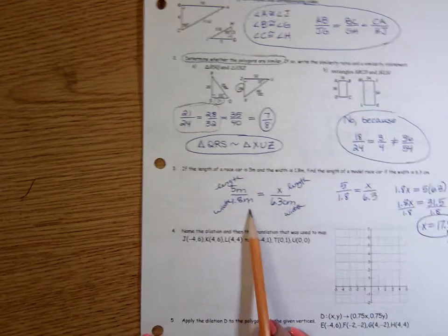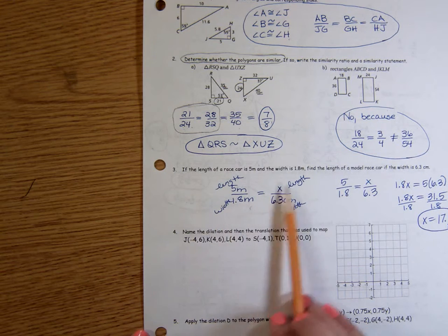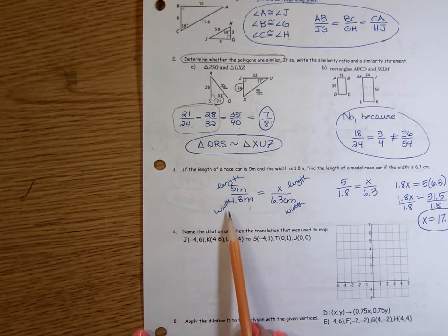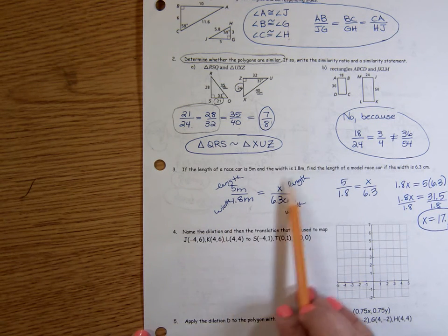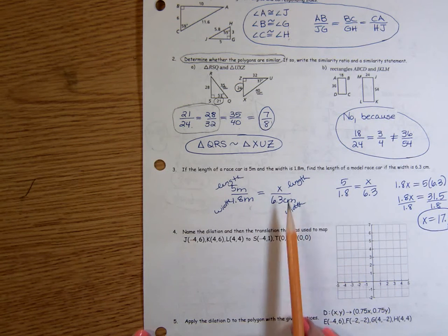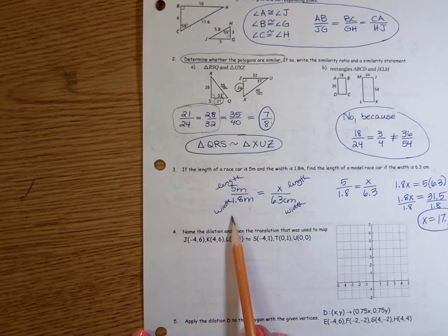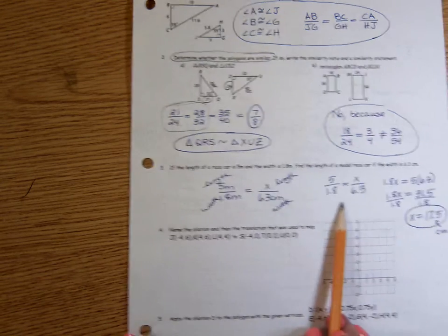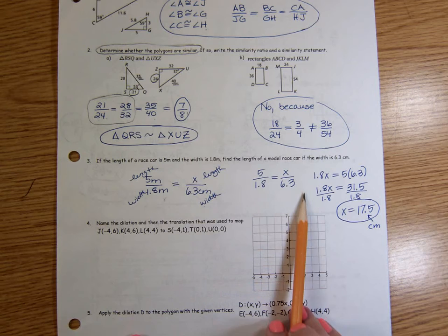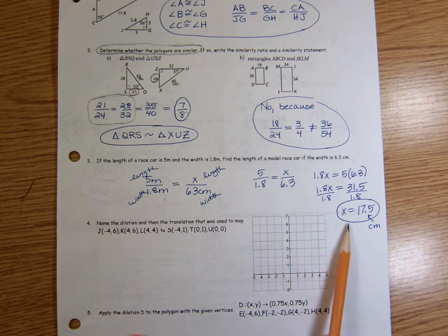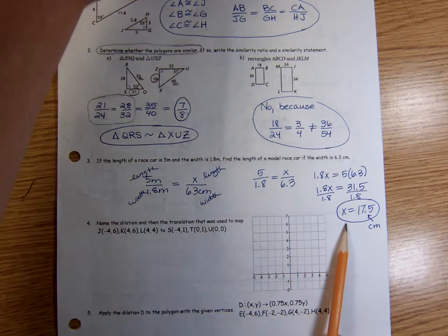Okay, here you just have to make sure you compare the same things. Like this is the length of the race car over the width of the race car, length of the model over the width of the model. So as long as you set it up so that like if it's length over width over here, it needs to be length over width over here, and then all this work over here is cross-multiplying. Okay, so you can go back and pause. I'm moving on if you want to see that.